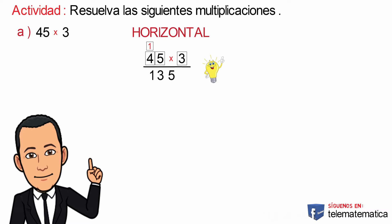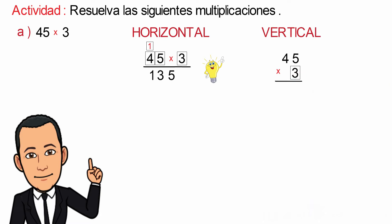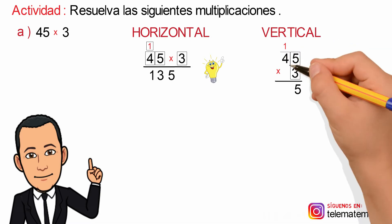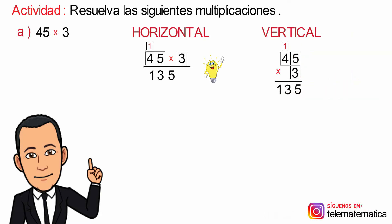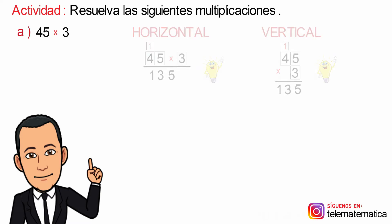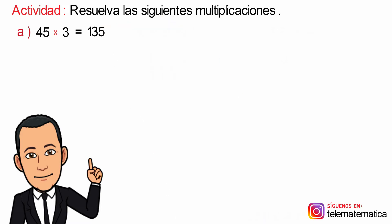The other option is vertical multiplication, which consists of writing the operation vertically and solving in a similar way. Multiplying 3 by 5 gives us 15; we write the 5. Then 3 by 4 gives us 12 plus 1 carried equals 13, and this would be the result. Remember that you can use either option to perform the multiplication.